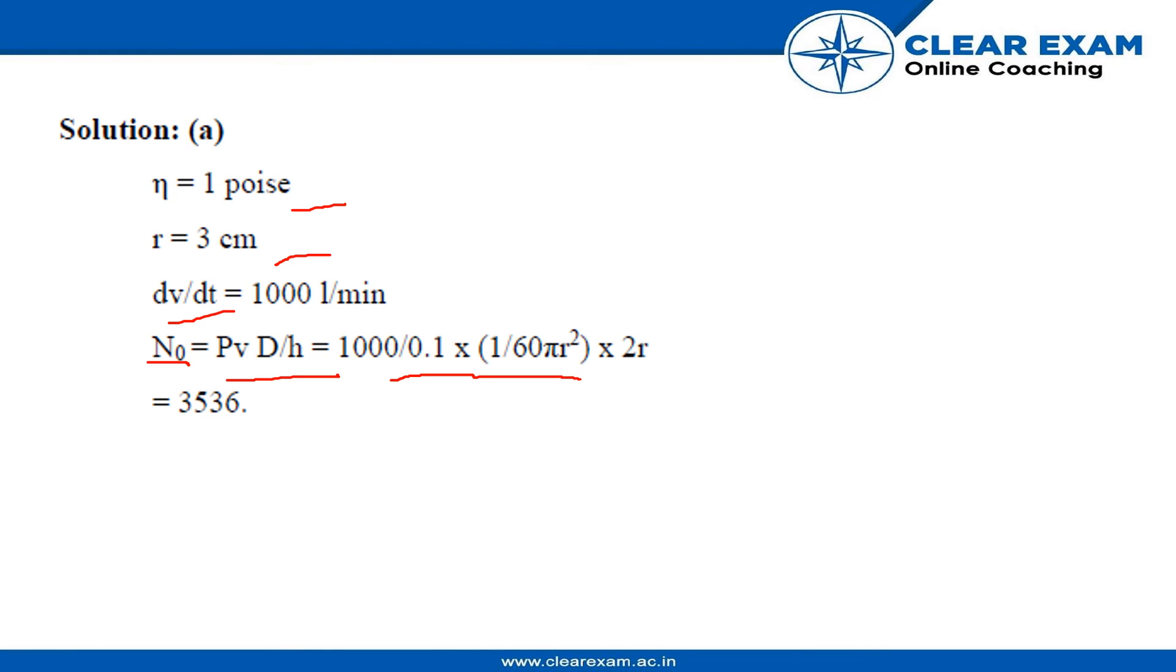The viscosity is also 1 poise. So 1 upon 60 π R square into 2R. We will substitute the value of R which is given in the question, that is 3 cm, and solve this equation to find the Reynolds constant. It would come out to be 3536. So the Reynolds constant for this question would be 3536.